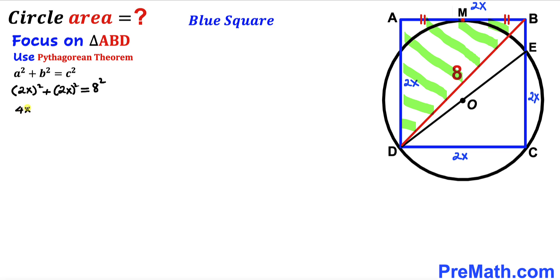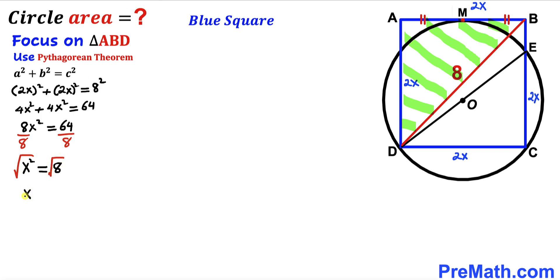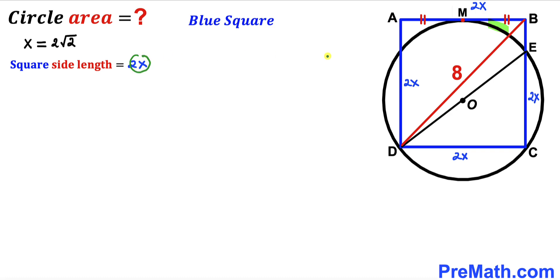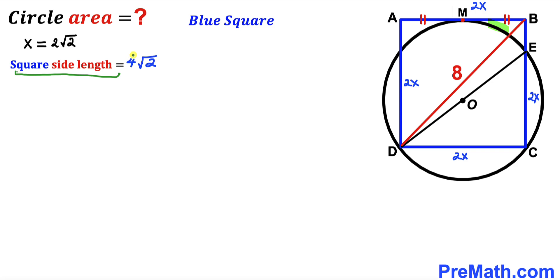Simplifying: 4x² + 4x² = 64, which gives 8x² = 64. Dividing both sides by 8, x² = 8. Taking the square root, x = √8 = 2√2. Since the square's side length is 2x, the side length is 2 × 2√2 = 4√2.